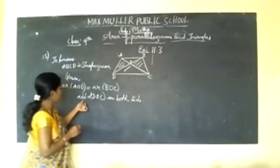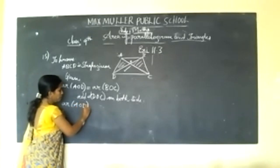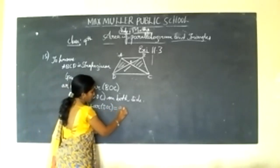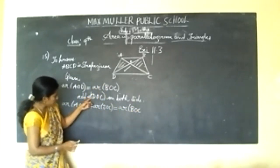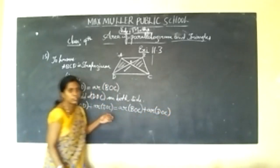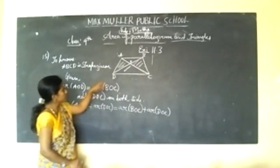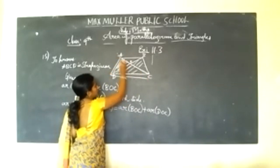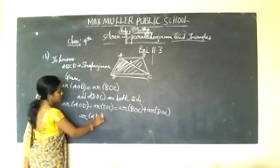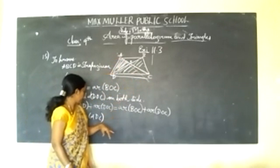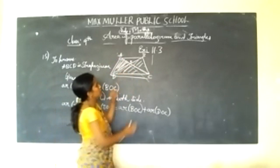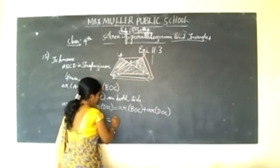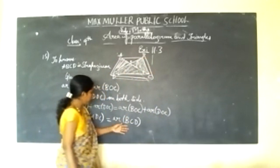When you add area of DOC on both sides: LHS gives area of AOD plus area of DOC, which equals area of triangle ADC. RHS gives area of BOC plus area of DOC, which equals area of triangle BCD. So we get area of ADC is equal to area of BCD.